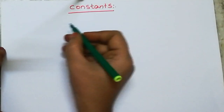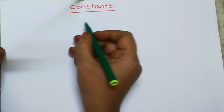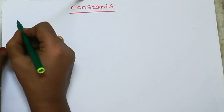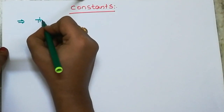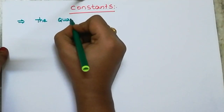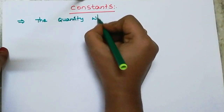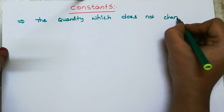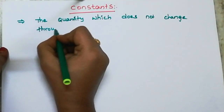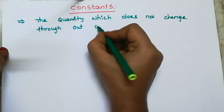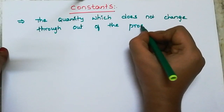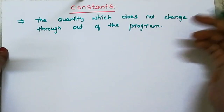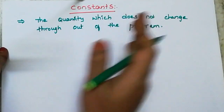Hi students, last class we covered variables. Today I will present the topic of constants. Constants means a quantity which does not change throughout the program. The quantity which does not change throughout the program is called a constant. So the difference between a constant and a variable is important.